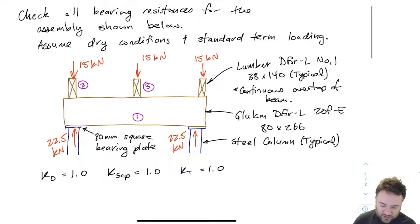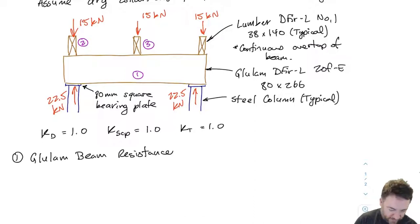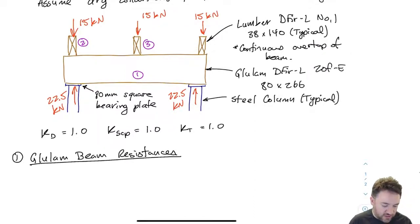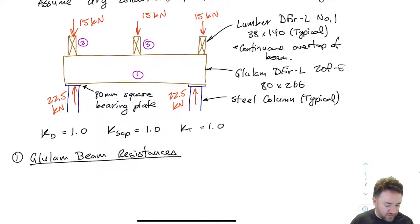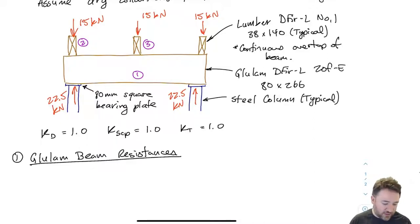The first thing we're going to do is calculate all the glulam beam resistances. We want to find what is the strength of the glulam beam for compression perpendicular. I'm going to find all the parameters first and then plug them into the equation for QR, which we reviewed in the previous video.